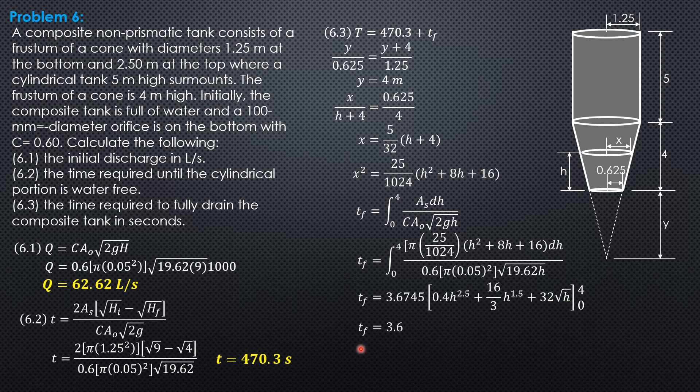Substituting the limits: So 3.6745 × (0.4 × 4^2.5 + 16/3 × 4^1.5 + 32√4 minus lower limit. Everything has h = 0. So T_f is equal to 449.0 seconds.